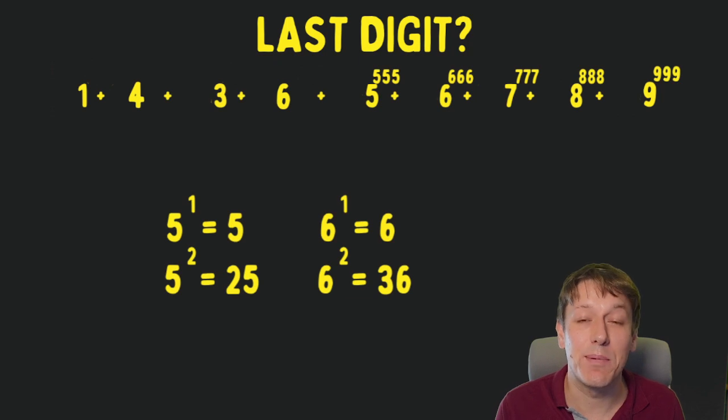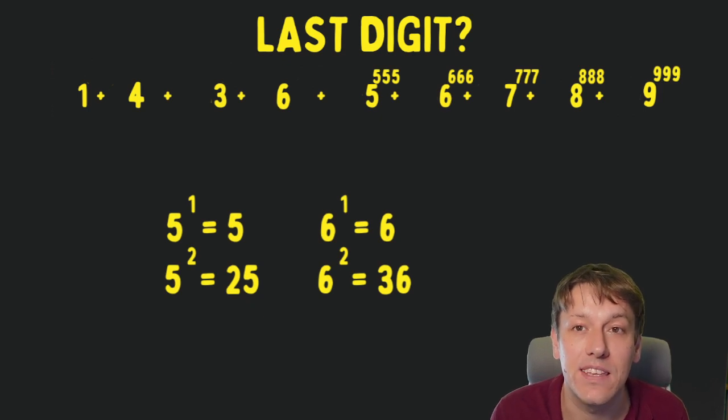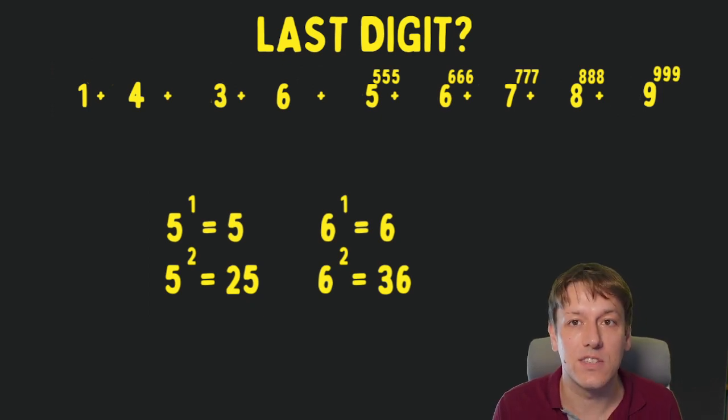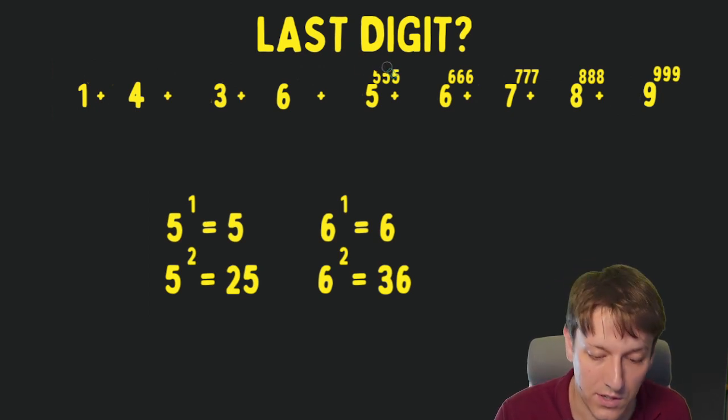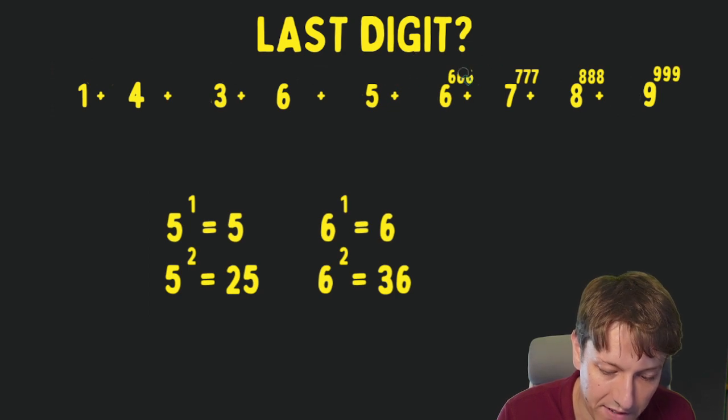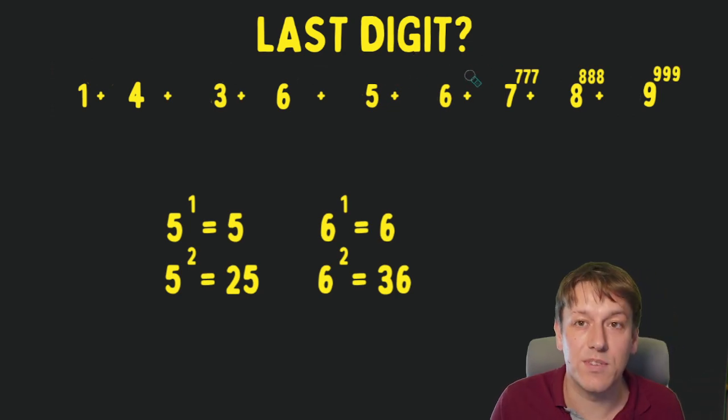5 and 6 are the easiest ones yet, because 5 times 5 is 25. That ends in a 5, so actually any power of 5 must end in a 5, because I'm going to just keep multiplying something with last digit 5 by 5. Same with 6, 6 times 6 is 36, so any power of 6 will end in a 6 for the same reason. So I can just replace 5 to the 555 and 6 to the 666 with 5 and 6.